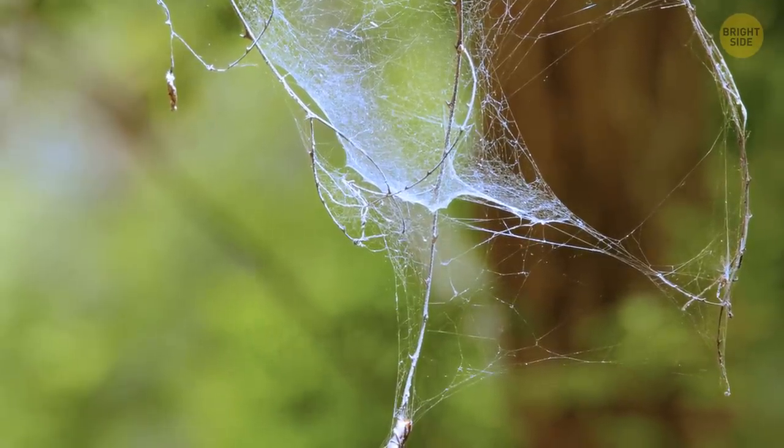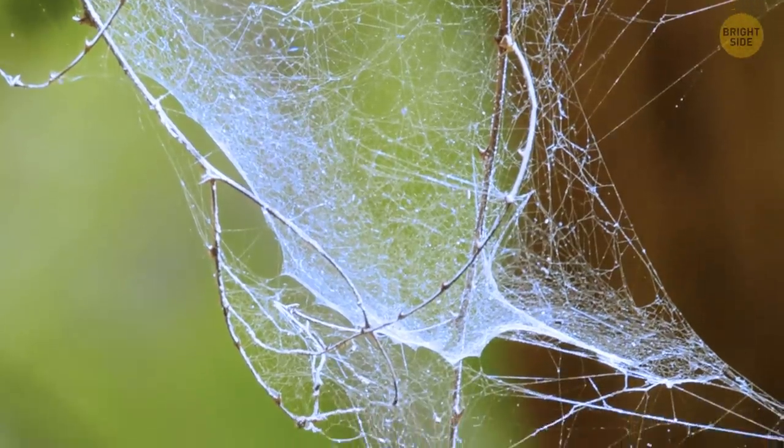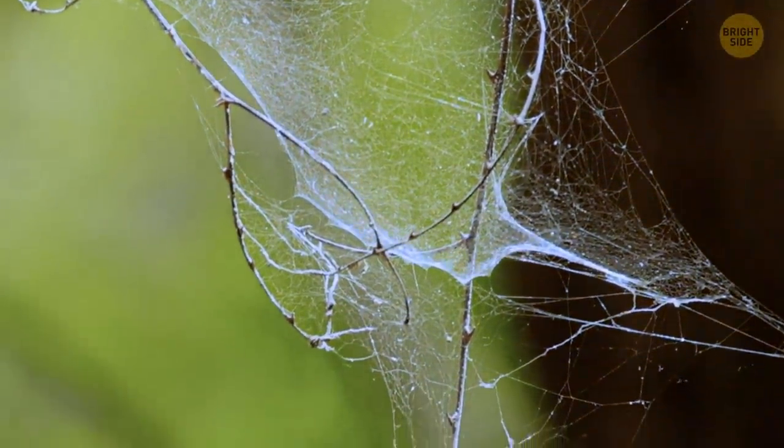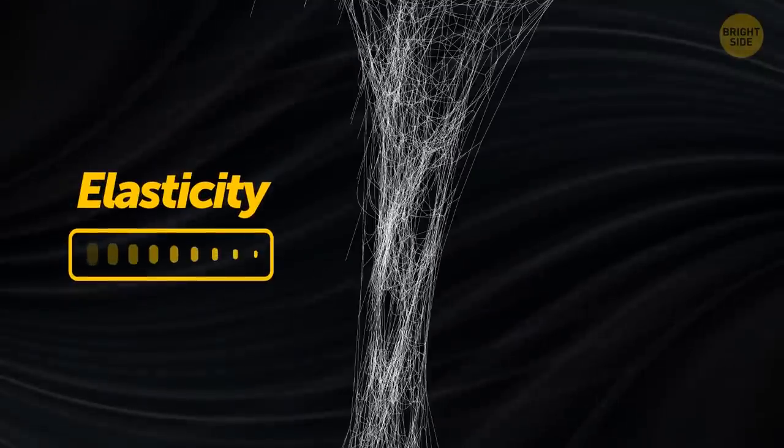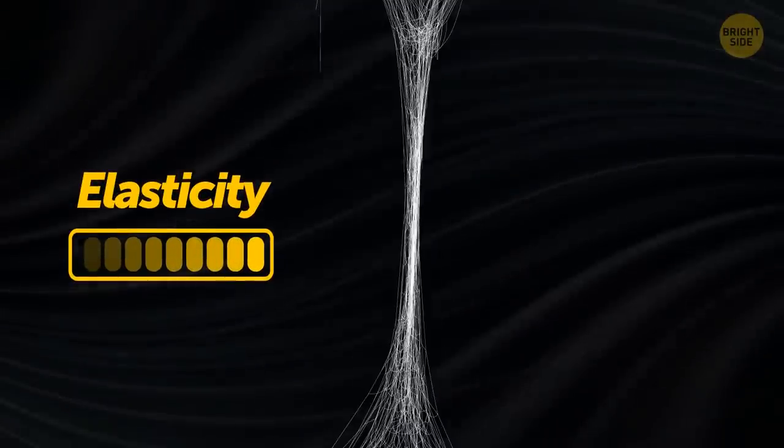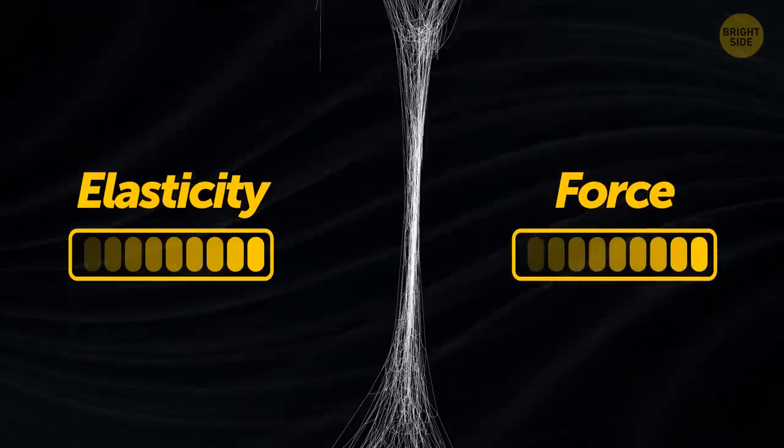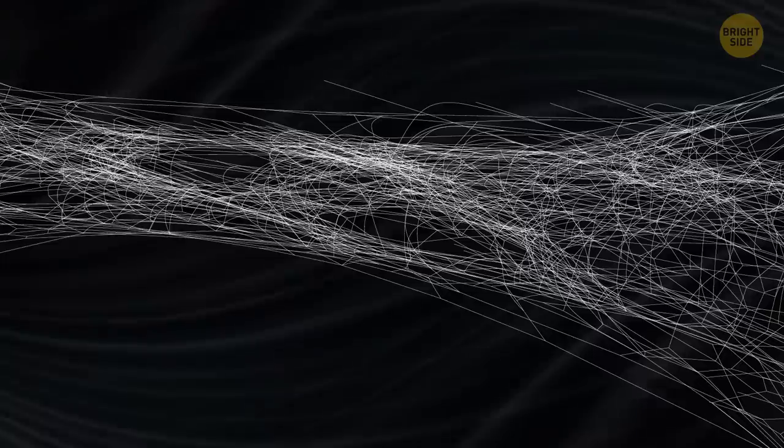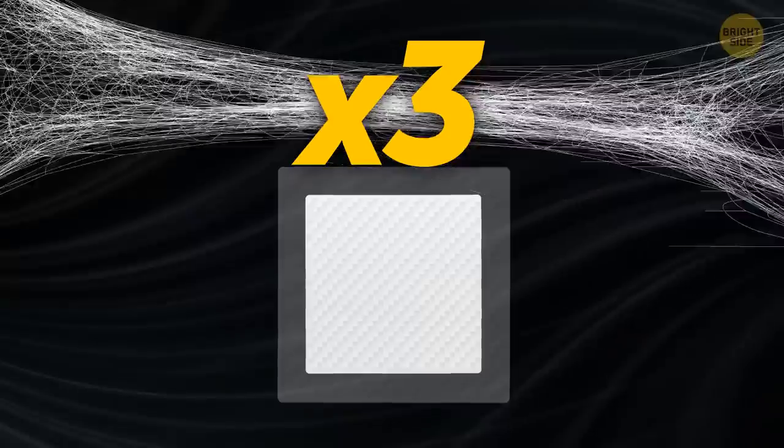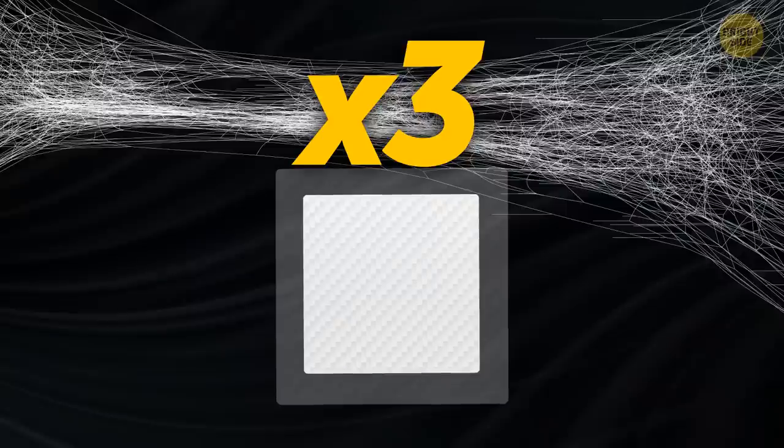They trap their prey in that web. They use it to dangle from the ceilings in our homes and haunt our dreams too. Their silk is extremely stretchy. Considering how stretchy the silk is, plus the amount of force you need to use to break it, that combination shows the silk is so strong, it's able to take three times as much energy as Kevlar before it breaks.